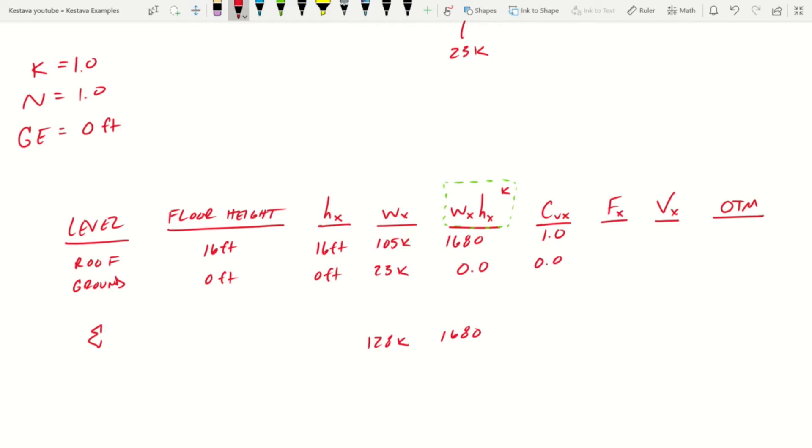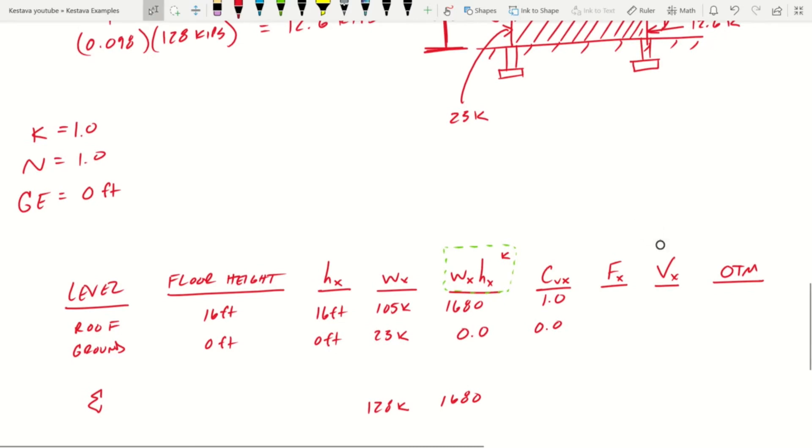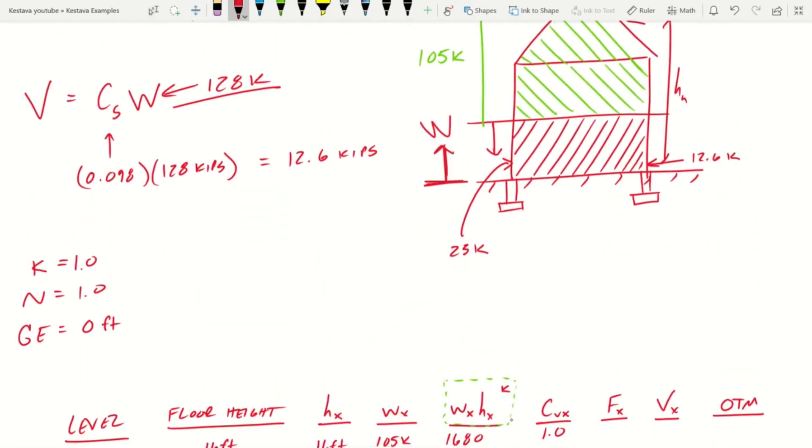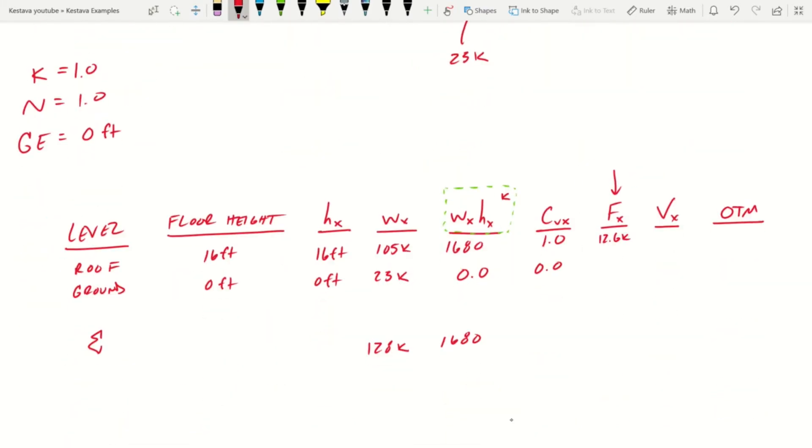fx, in turn, is equal to, like we said, cvx times v. Well, that's pretty straightforward. That means that the lateral forces fx being applied at the roof are identical to your base shear. And our base shear, we know, is 12.6 kips. fx is v times cvx. And we know that this is 0 kips. And what we can generate as well, what I'd like to throw in, is your overturning moment.